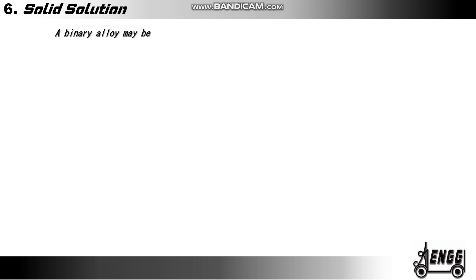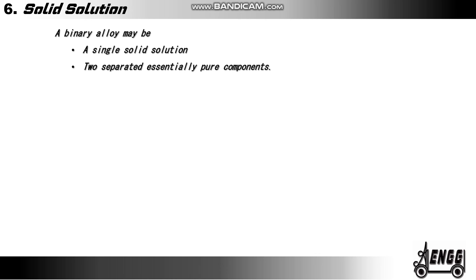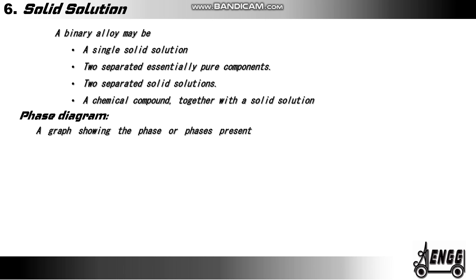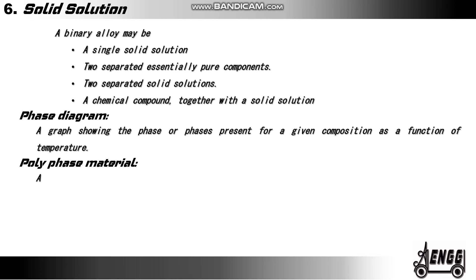Solid solutions. A binary alloy may be a single solid solution, two separate essentially pure components, or a chemical compound together with a solid solution. Phase diagram: a graph showing the phase or phases present for a given composition as a function of temperature. Polyphase material: a material in which two or more phases are present.